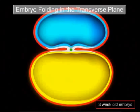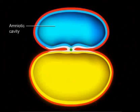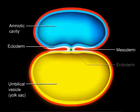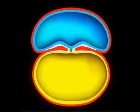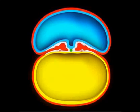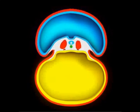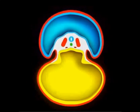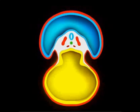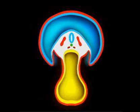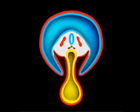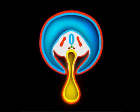The flat trilaminar embryonic disc becomes a more cylindrical embryo due to the longitudinal and transverse folding that occurs as a result of embryonic growth. The placenta is formed of the cytotrophoblast, syncytiotrophoblast, and parietal extraembryonic mesoderm. The yolk sac diminishes in size. The umbilical cord connects the embryo to the mother and contains the vitelointestinal duct, allantois, left umbilical vein, right and left umbilical arteries, and Wharton's jelly.